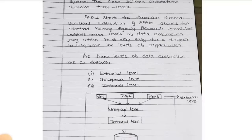The 3 types are: External level, Conceptual level, and Internal level. These 3 types you need to remember and you need to explain each one separately.